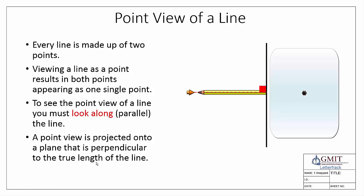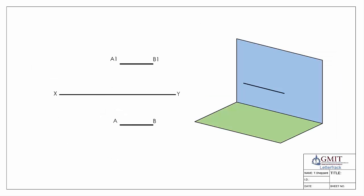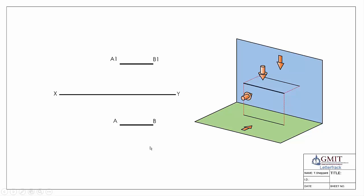We're going to look at the various scenarios you're likely to encounter in your own drawings. In our first example we have a single line — here is the front elevation, here is the plan view, and here is the 3D view. Because this line is horizontal in both elevation and plan view, when projected into the front elevation it's a true length, and when projected to plan it's also a true length.